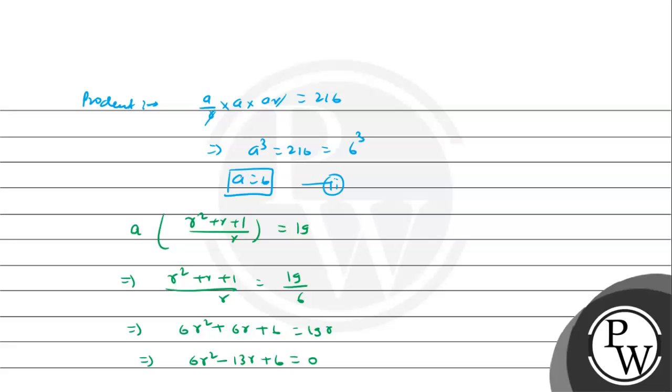Now we need to factorize this. 6 times 6 is 36. Factorization gives us 6 R squared minus 9 R minus 4 R plus 6 equals 0. Taking 3 R common gives 2 R minus 3, and taking minus 2 common gives 2 R minus 3.